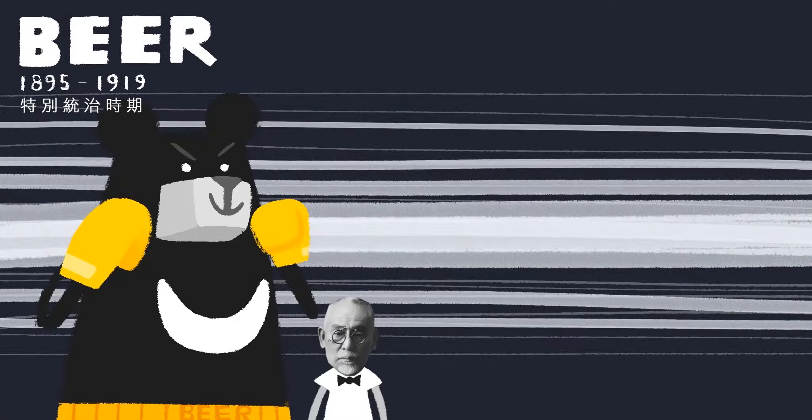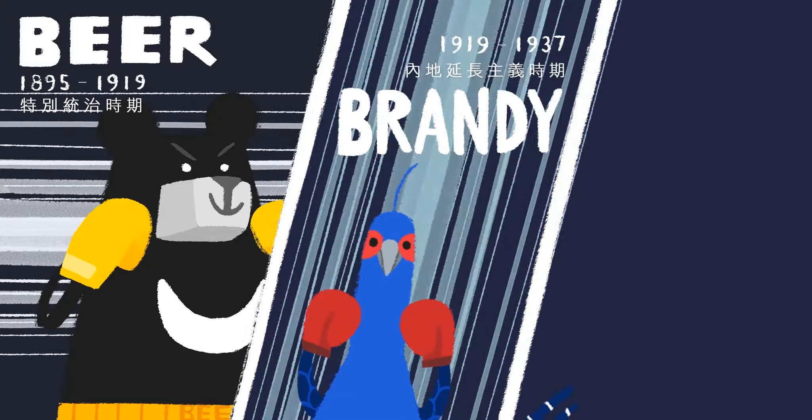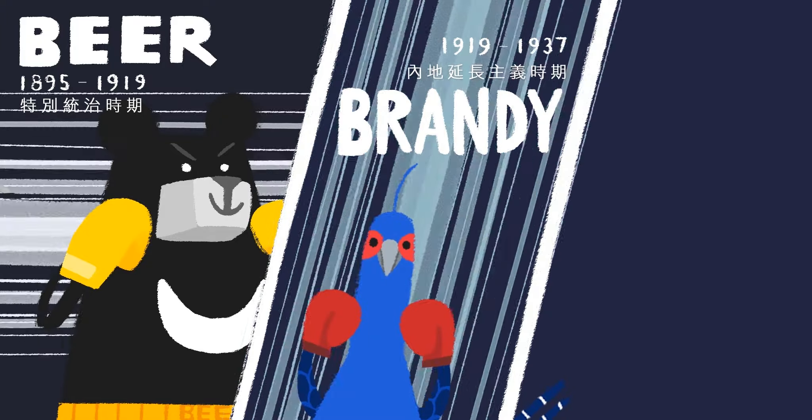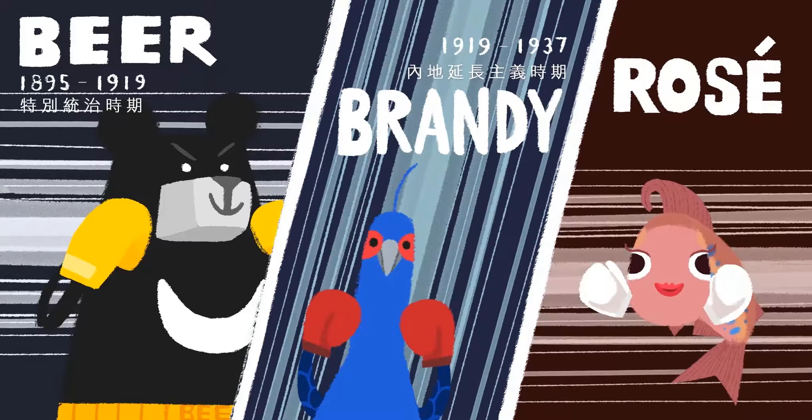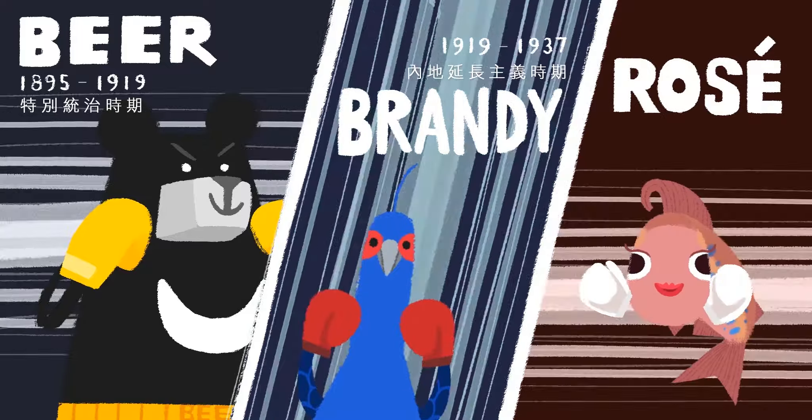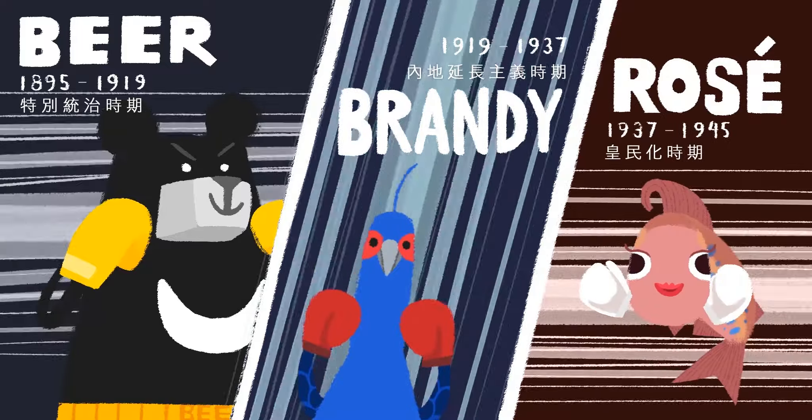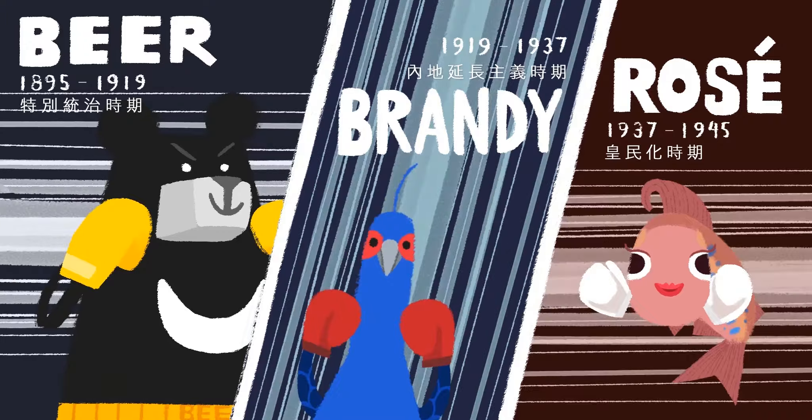Ladies and gentlemen, in the left corner represented by Goro Shinpei, the special ruling period! Next in the middle we have the assimilation period! Finally in the right corner of the one and only, and we're not actually going to talk about it in this episode, the Kouminka period! That felt good.